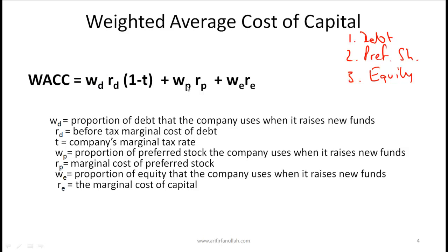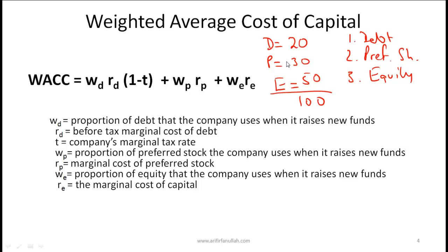The weights refer to relative market values. For example, if a company has a market value of debt of $20 million, preferred shares of $30 million, and common equity of $50 million, the total is $100 million. The weight of debt is 20/100 = 0.2, the weight of preferred shares is 30/100 = 0.3, and the weight of equity is 50/100 = 0.5.